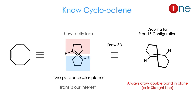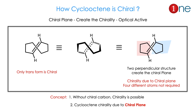Cycloalkene is a continuous cyclic compound with a single-double bond. It can be cis or trans, but our sole interest is trans because it is the chiral compound and we can assign R and S to it. When drawing in 3D, I strongly encourage you to draw the double bond in the horizontal way — the double bond should be on a straight line. Like biphenyl, it creates two perpendicular planes. Cycloalkene's chirality is interesting because the chiral plane creates chirality and makes it optically active. Only trans-cycloalkene is chiral.